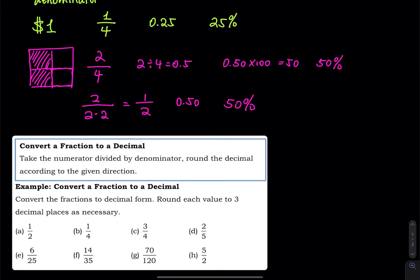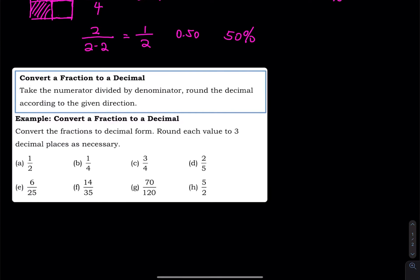So let's take a look at some examples. I am going to convert a fraction to a decimal. We take the numerator divided by the denominator, then round the decimal according to the given direction. In this case, round everything to three decimal places as necessary. The first value is 1 half — part A — which we already did.